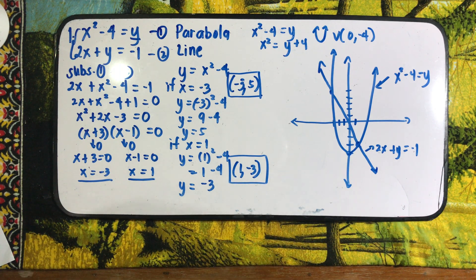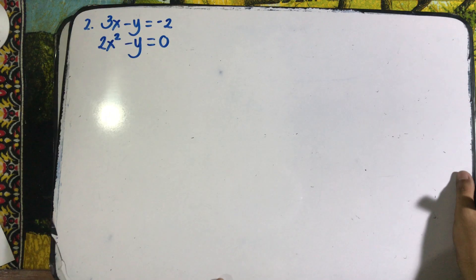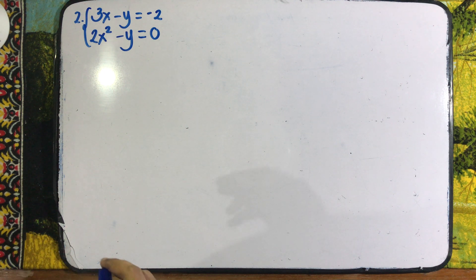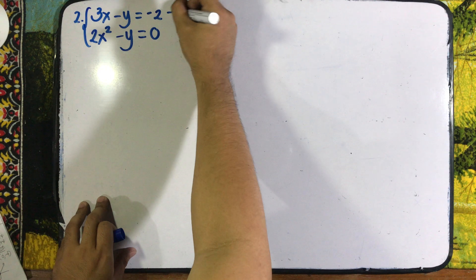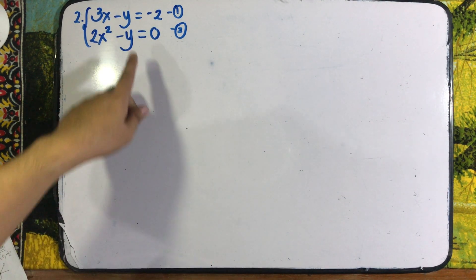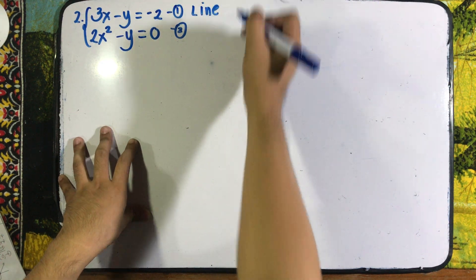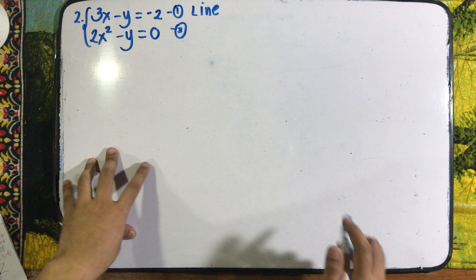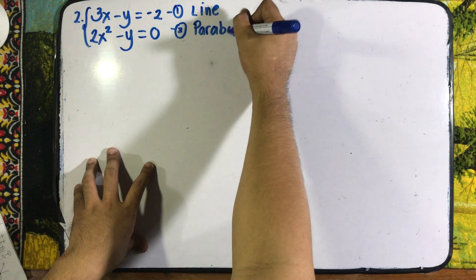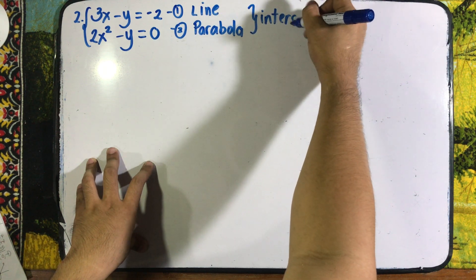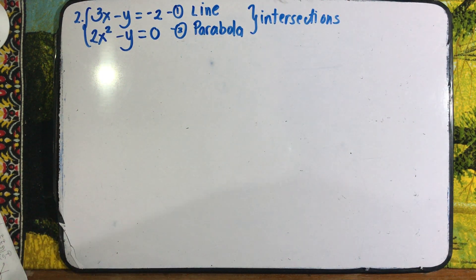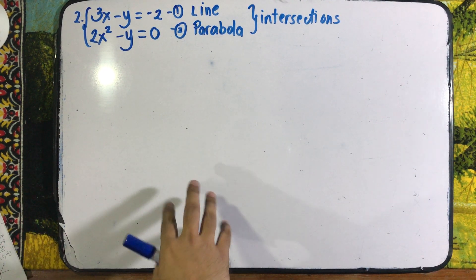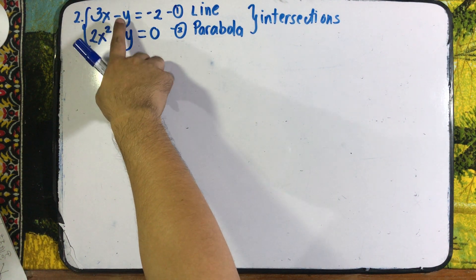Let us now try to solve another example. We are given 3x minus y equals negative 2 as equation 1, and 2x squared minus y equals 0 as equation 2. Equation 1 is a line since it is a linear equation. For equation 2, since only one variable is being squared, this is a parabola. We are looking for their intersection.